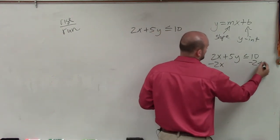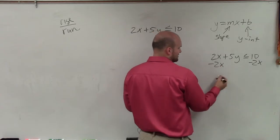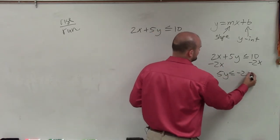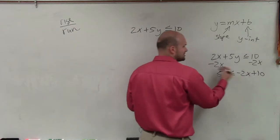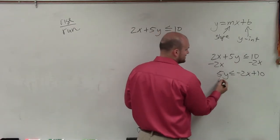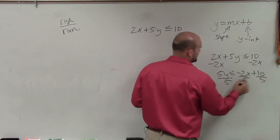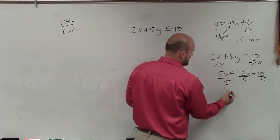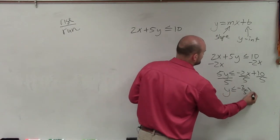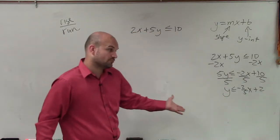I need to undo all the operations happening to my variable. I'm undoing adding 2x by subtracting 2x on both sides, so I have 5y is less than or equal to negative 2x plus 10. Since I'm subtracting — not dividing or multiplying — my sign remains the same. Then I divide by 5 on both sides, distributing the 5 to both terms, giving me y is less than or equal to negative 2/5 x plus 2. You could graph that using slope-intercept form.